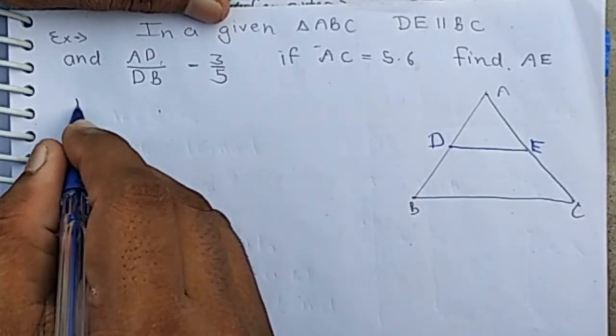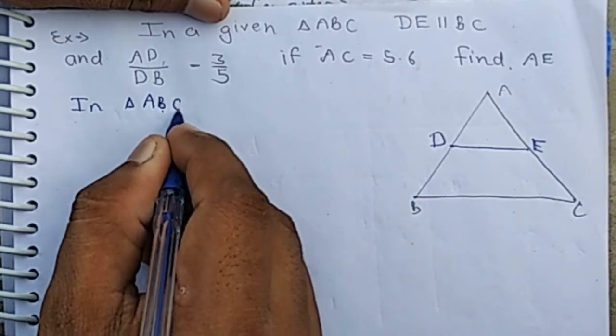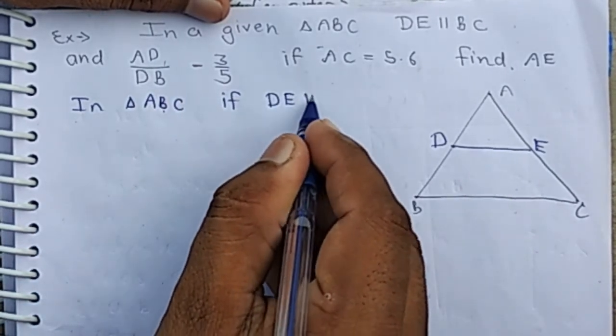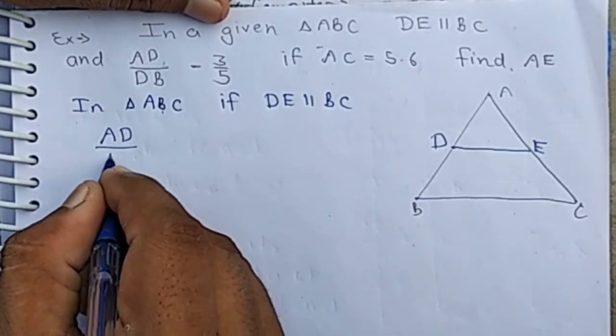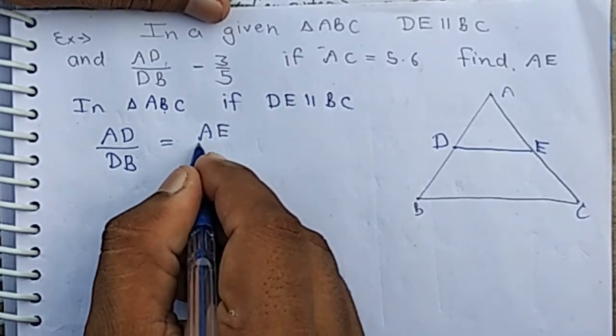In triangle ABC, since DE is parallel to BC, then by Thales' theorem, AD by DB equals AE by EC.